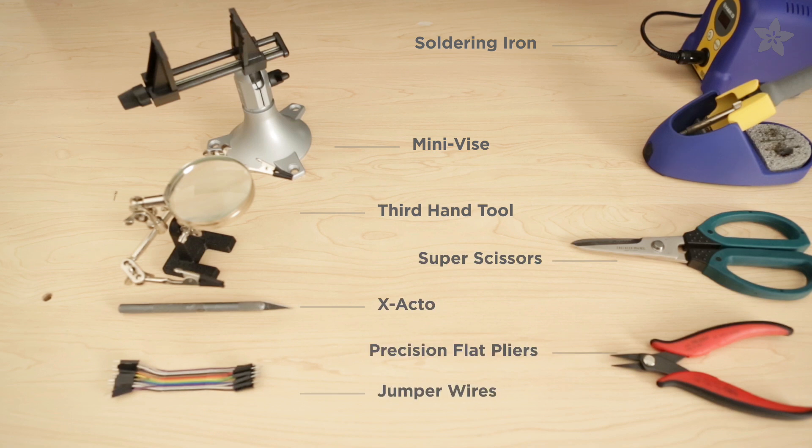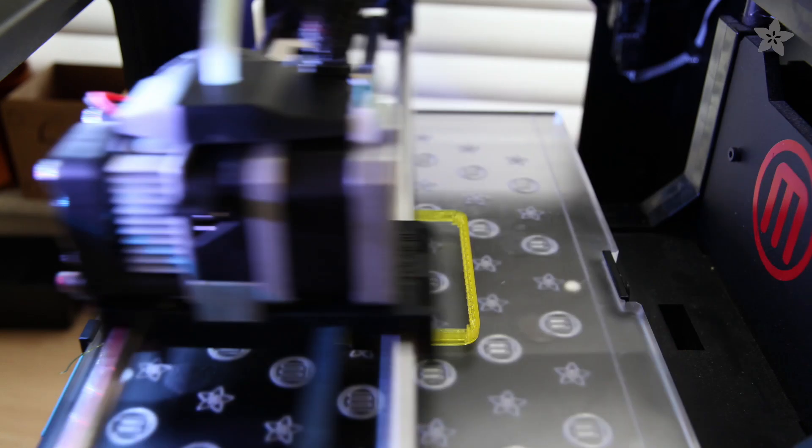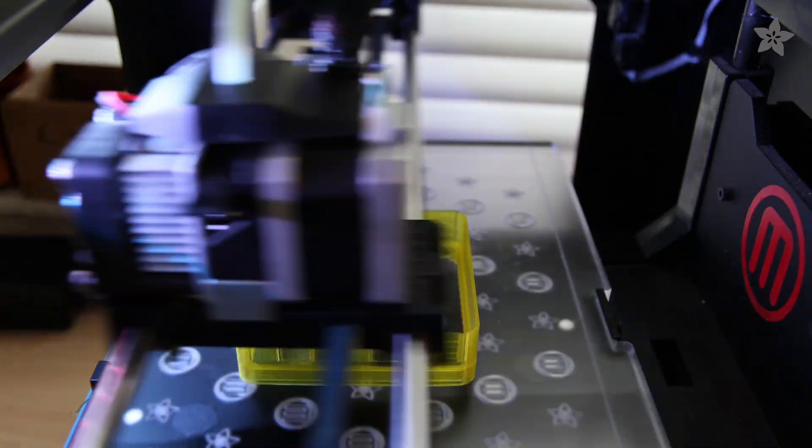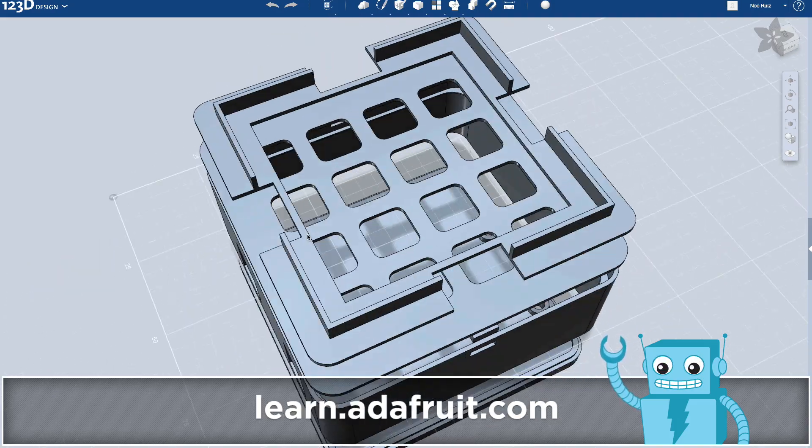Customize and 3D print our enclosure to fit your controller. We're making a basic 4x4 button box. It's small and handheld. Our 4-piece design fits the Trellis PCB, elastomer buttons, and an Arduino.